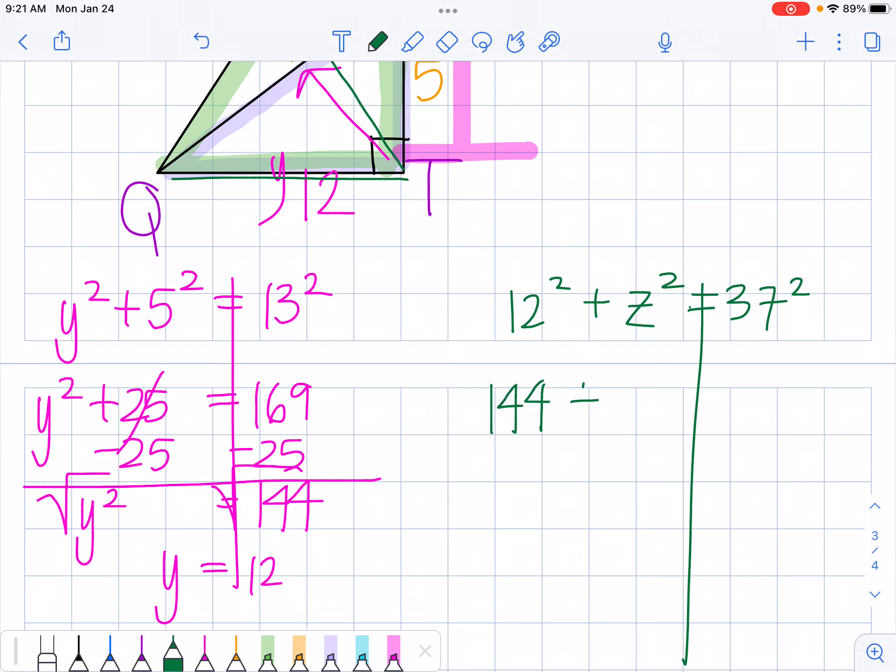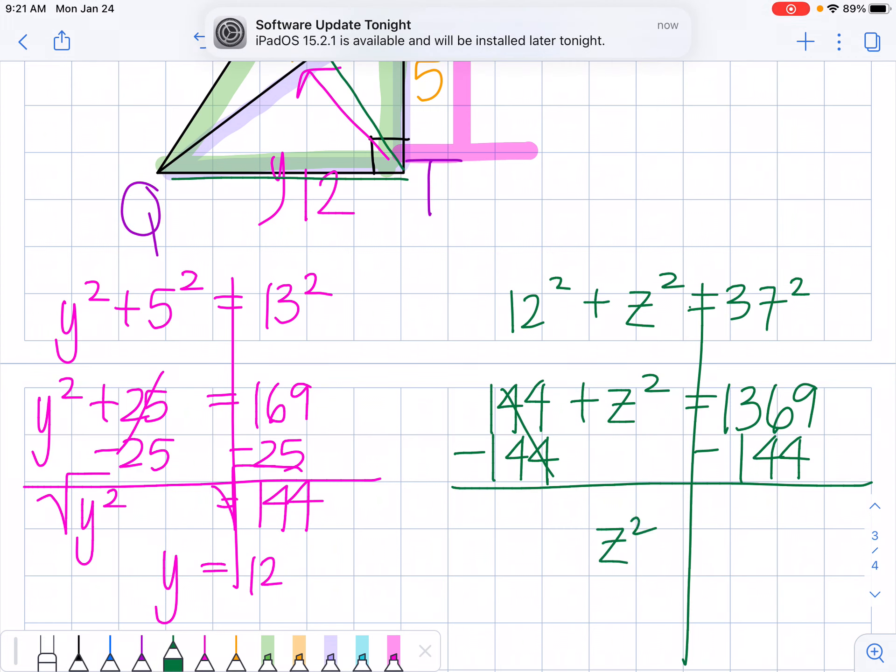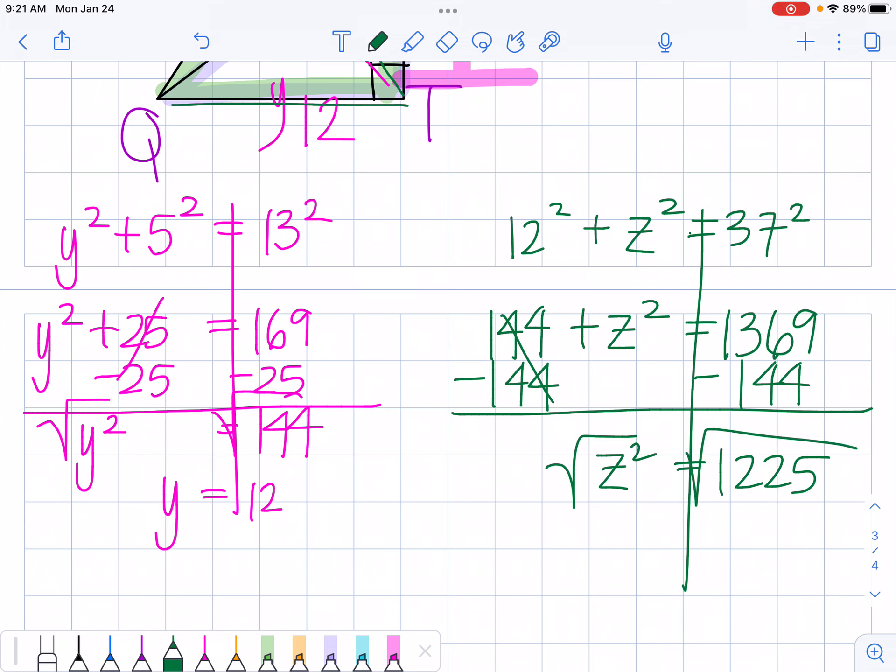Okay, I know 12 squared is 144. And let's figure out 37 squared, that's 1369. I'm going to subtract 144 from both sides. So I get z squared is equal to 1225. And to cancel out my squared, I'm going to square root both sides. And I get z is equal to 35.